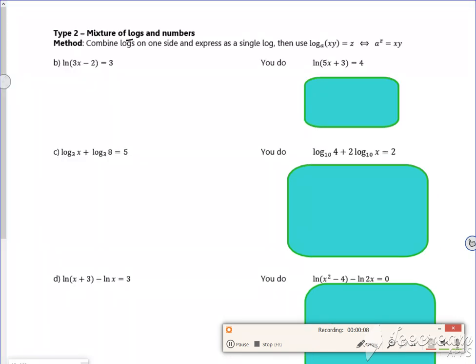So it says a mixture of logs and numbers. Right, so different ways of doing it. A nice easy way is to remove the log.